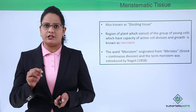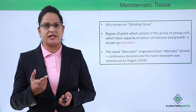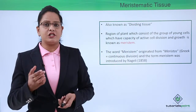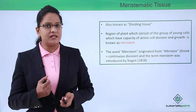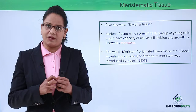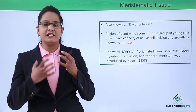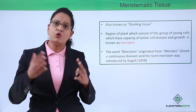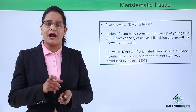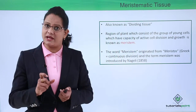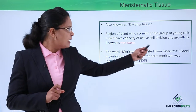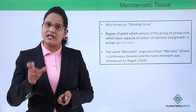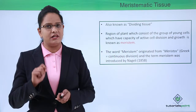The word meristematic tissue comes from meristem, which means continuous division. So continuously dividing tissue is meristematic tissue. Meristem means that region of the plant which consists of continuously dividing cells, and these cells can actively divide throughout the life of the plant. The word meristem comes from the Greek word 'meristos', meaning continuous divisions. This term meristem was given by Nageli in 1858.